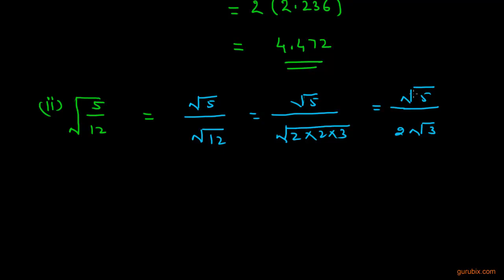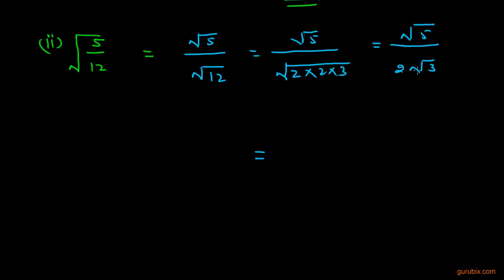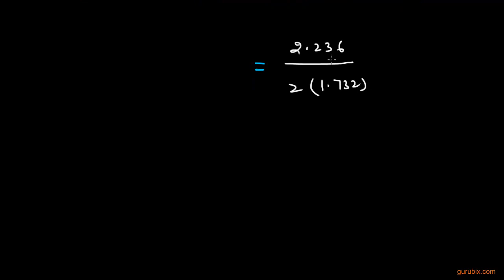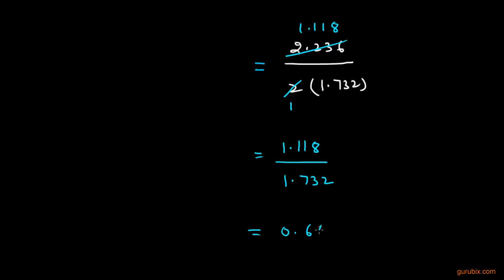Using the square root table, the value of √5 is 2.236 and the value of √3 is 1.732. We simplify: dividing 2.236 by 2 gives 1.118, so the expression becomes 1.118 / 1.732. Dividing these gives 0.645. So the square root of 5/12 is 0.645.